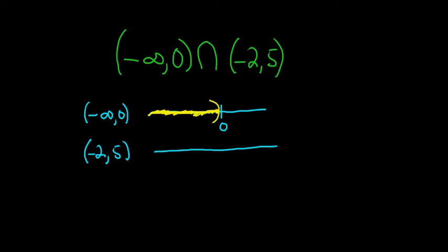Negative 2 is to the left of 0, so maybe it's over here. And 5 is bigger than 0, so maybe it's over here. We have parenthesis on both endpoints, so we'll use parenthesis, parenthesis.